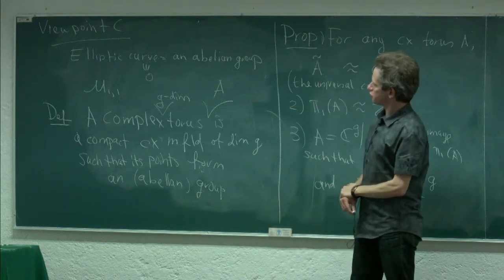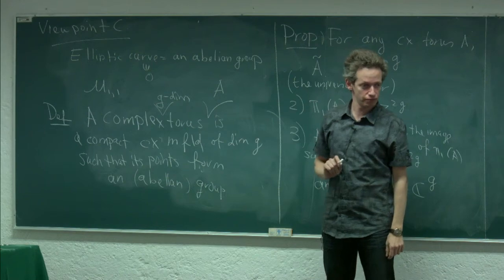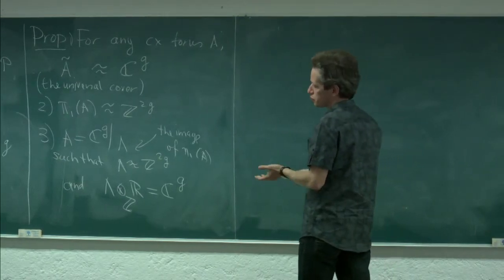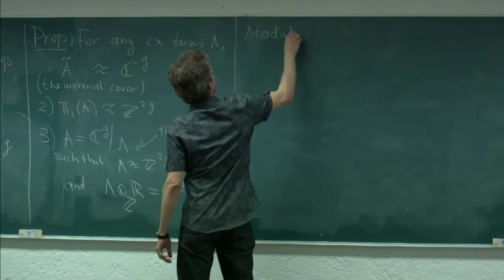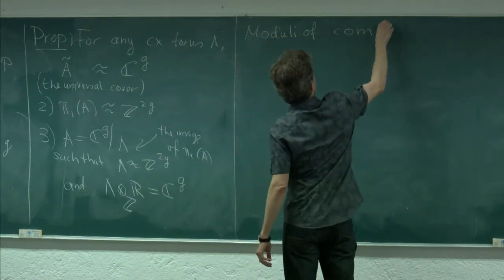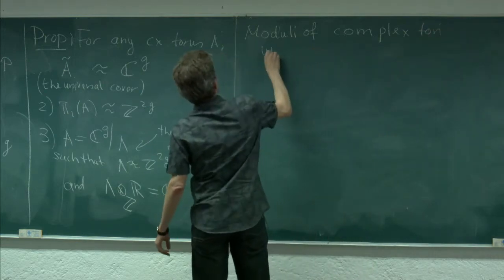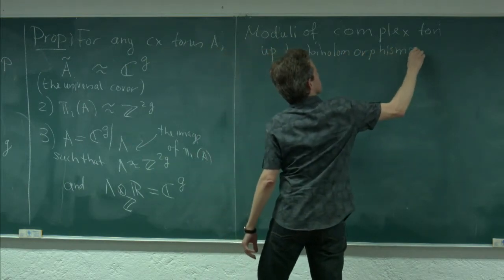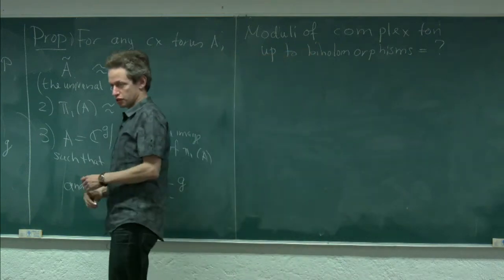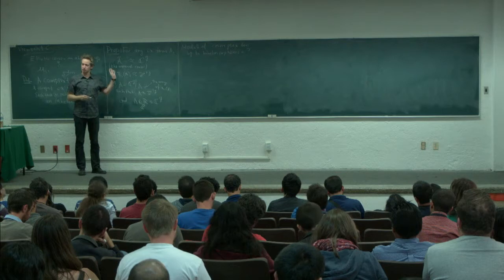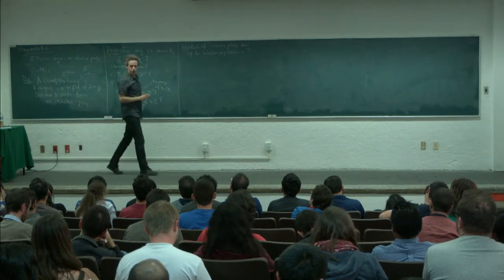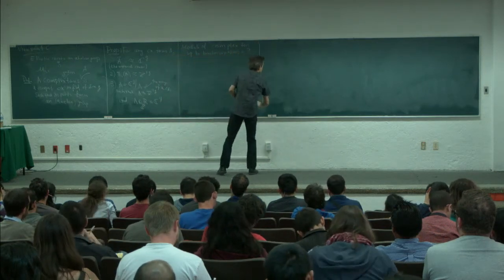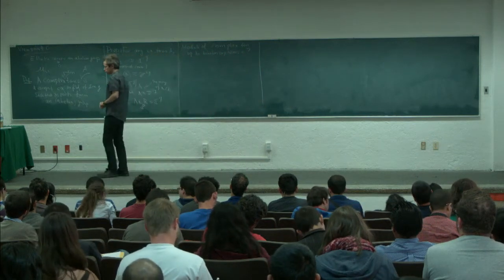So this is a complex torus. If you are suitably naive, you would think this is a great generalization of the notion of an elliptic curve, and you would try to understand moduli of complex tori up to biholomorphisms. You can read a beautiful book by Olivier on complex tori, which will tell you a lot. But there is something that you are actually missing in the picture.